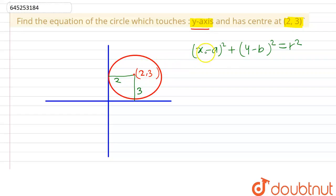So we can replace this a and b by 2 and 3, and can clearly see that our radius is two units because it is given that it touches y-axis. So our circle is simply (x - 2)² + (y - 3)² = 2².